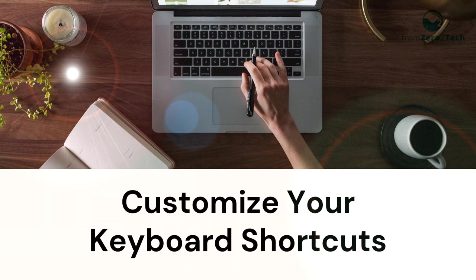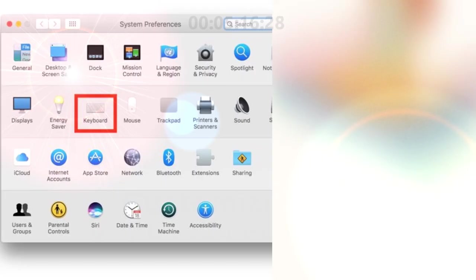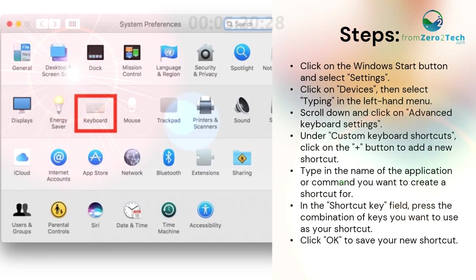Customize your keyboard shortcuts. Click on the Windows Start button and select Settings. Click on Devices, then select Typing in the left-hand menu. Scroll down and click on Advanced Keyboard Settings. Under Custom Keyboard Shortcuts, click on the plus button to add a new shortcut. Type in the name of the application or command you want to create a shortcut for. In the shortcut key field, press the combination of keys you want to use as your shortcut. Click OK to save your new shortcut.